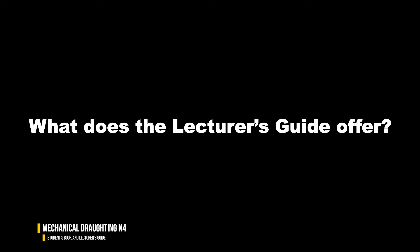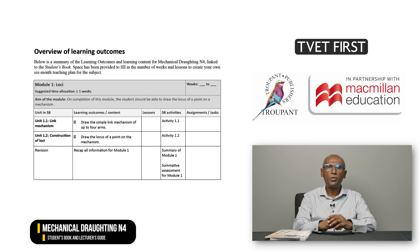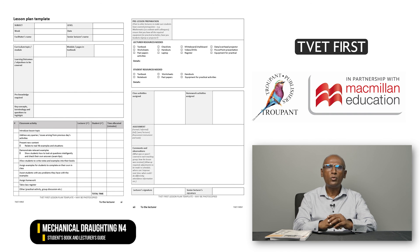What does the Lecturer's Guide offer? The Lecturer's Guide includes the answers to all activities and assessments in the student's book. It also provides an overview of the learning outcomes per module, which you can use to create a 10-week teaching plan for the subject. There is also a two-page lesson plan template which you can photocopy.